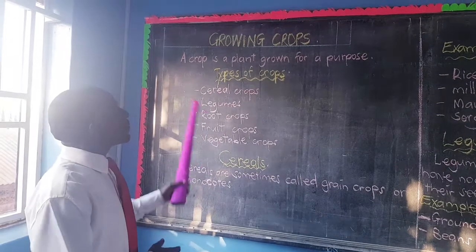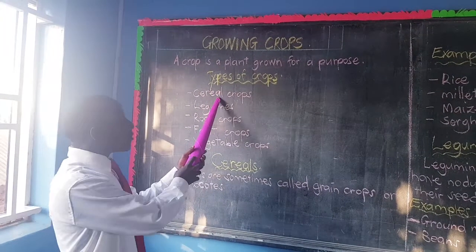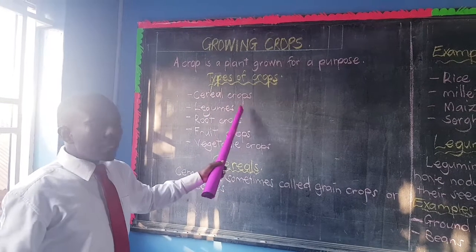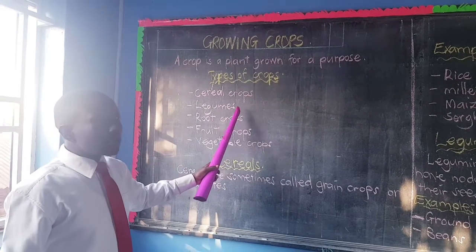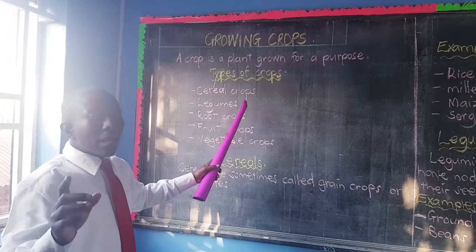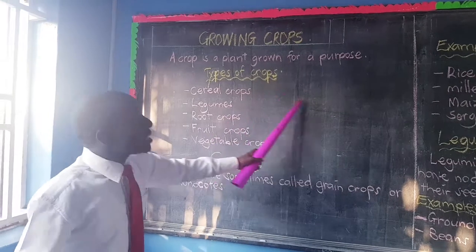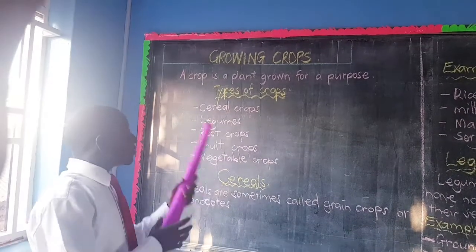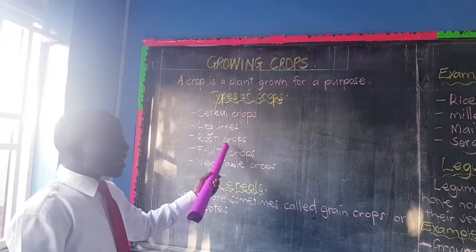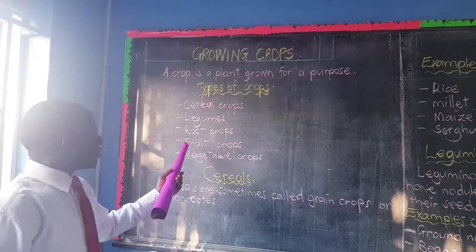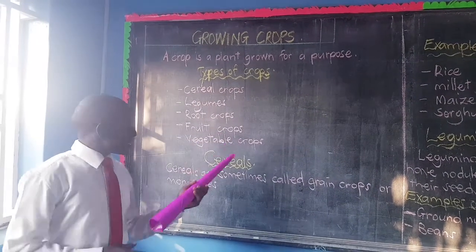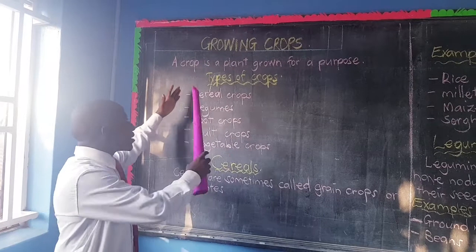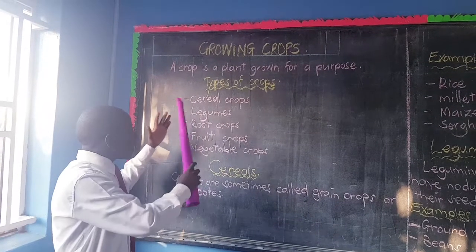The first type of crops we have the cereal crops. We have the legumes — remember I told you they are also called leguminous crops, but sometimes we say legumes. We have the root crops. We also have the fruit crops and the vegetable crops. We shall be looking at them one by one.